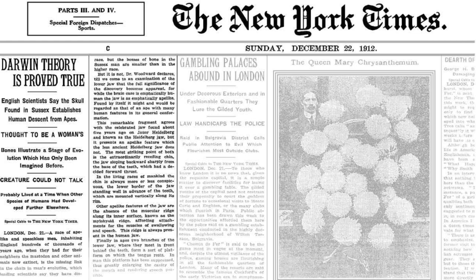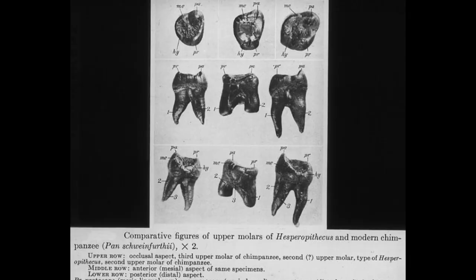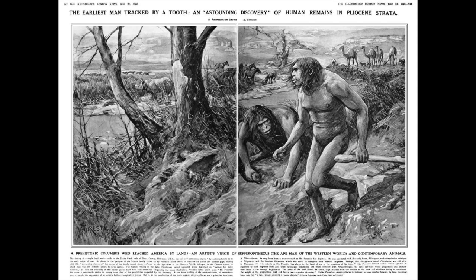In 1922, 10 years after Piltdown man was found, the tooth of a pig was discovered in Nebraska. An entire half-ape, half-human transitional imaginary creature was then drawn around the tooth. The scientific community had reached a consensus. Although we expected to see millions of transitional fossils to back up Darwin, we had one. But further excavation of the site, which for some reason didn't happen for four years, unfortunately turned out that it was just a pig tooth.